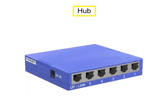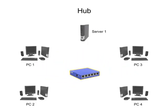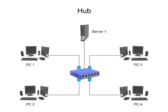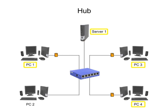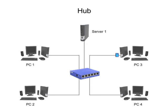A hub is a centralized connecting device, often located at the center of a star network, that automatically rebroadcasts any signal or data that it receives from one device to all other devices on the network. Because all the devices connected to a hub are competing for media usage, it's possible for collisions to occur when two devices send transmissions simultaneously. For this reason, it's important to avoid using a hub for messaging that requires immediate response.